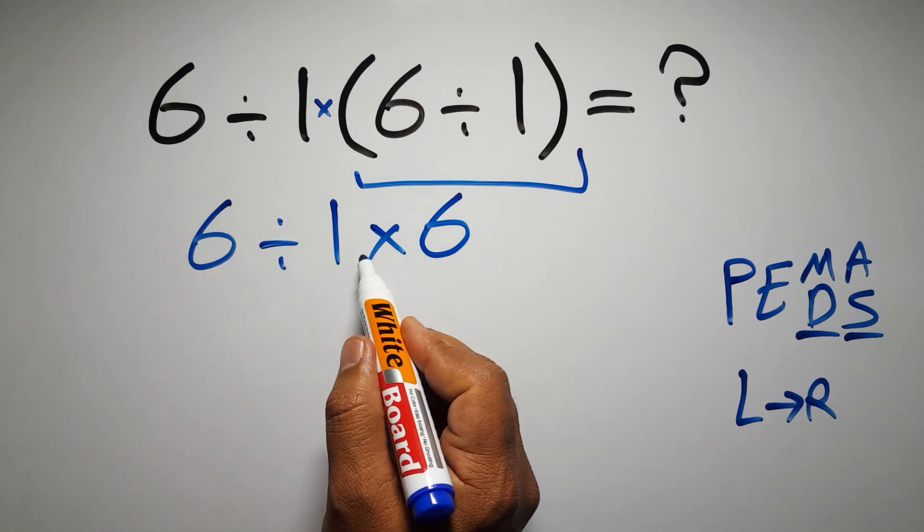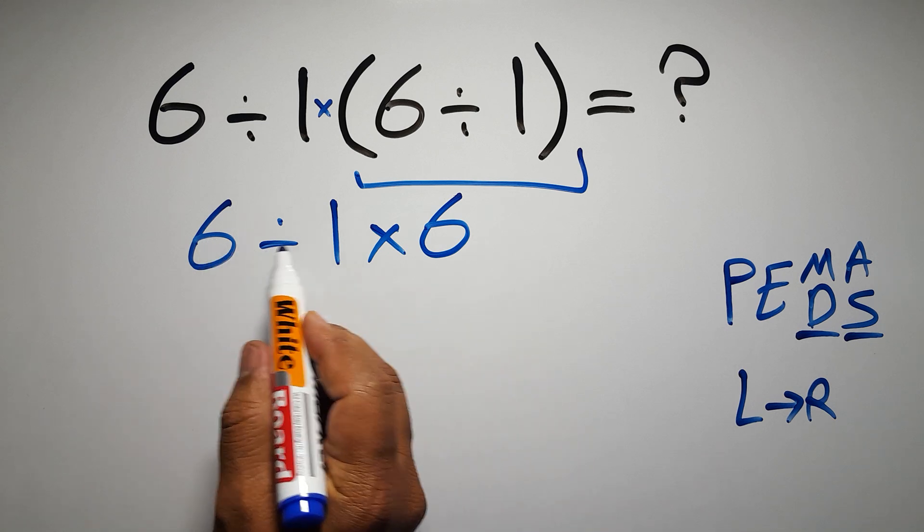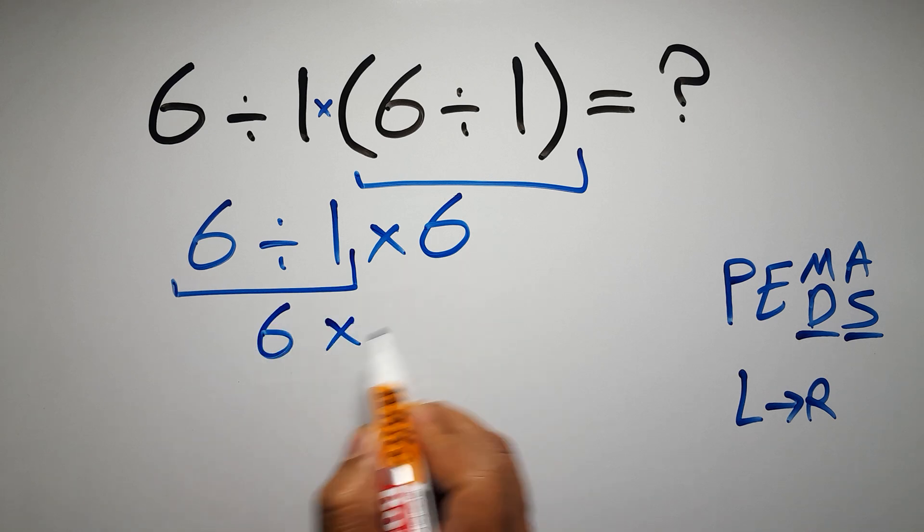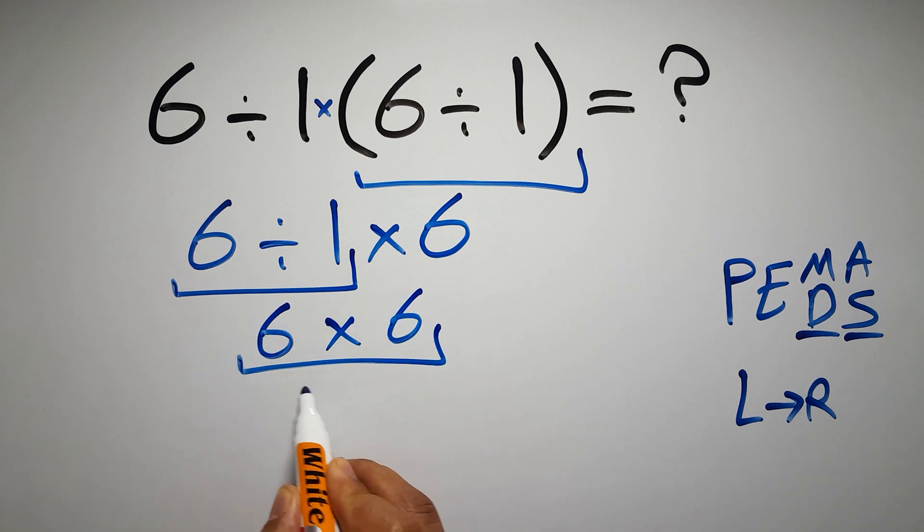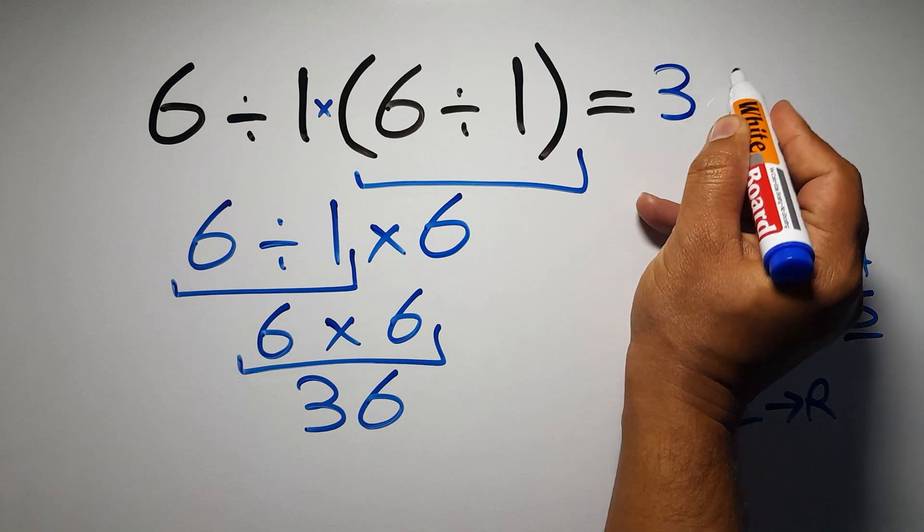Okay, so first 6 divided by 1 which equals 6, so 6 times 6 which equals 36. And this is our final answer to this problem. The correct answer is 36.